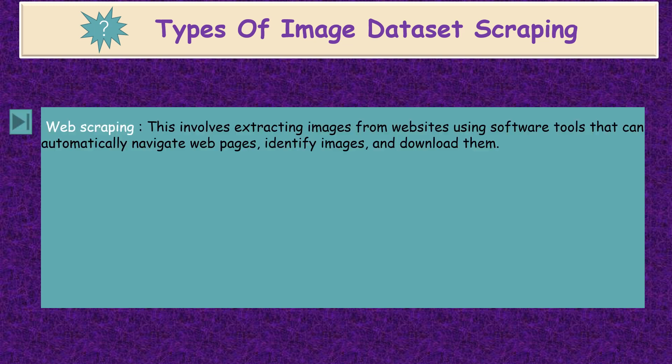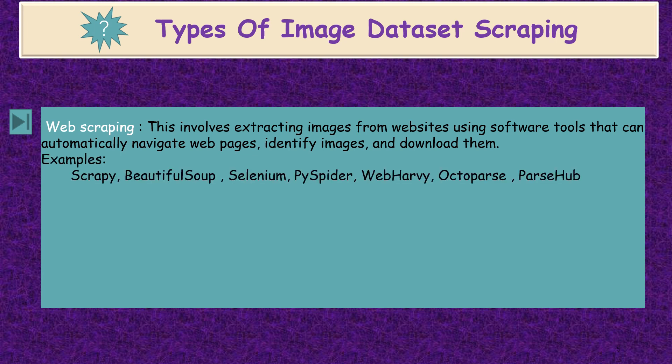Next, we are discussing the types of image dataset scraping. The first one is web scraping. This involves extracting images from websites using software tools that can automatically navigate the pages, identify images, and download them. Examples are Scrapy, BeautifulSoup, Selenium, PySpider, The Harvester, Octopus, and Scrapher.